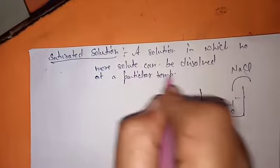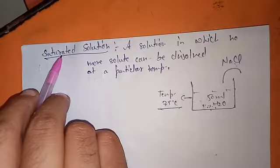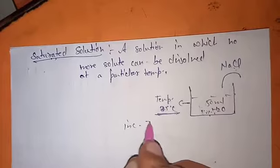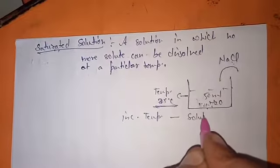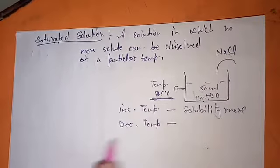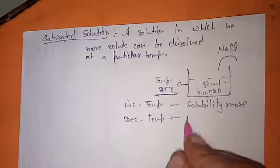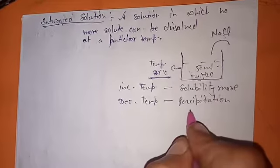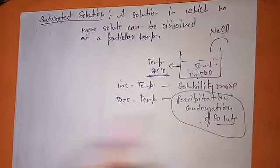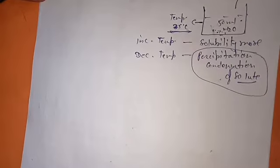Temperature is the governing factor of solubility. If you increase the temperature, more solute will dissolve. A saturated solution can only be prepared at a fixed temperature — by changing the temperature we cannot maintain it as saturated. If you decrease the temperature, the dissolved solute will start settling down, meaning precipitation or condensation of solute particles takes place.